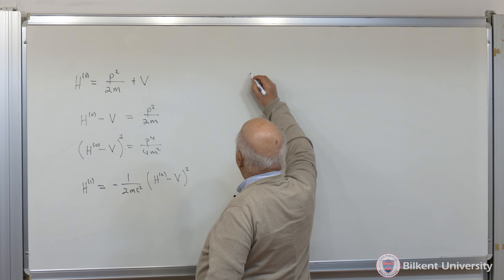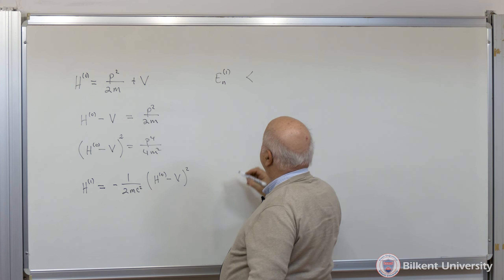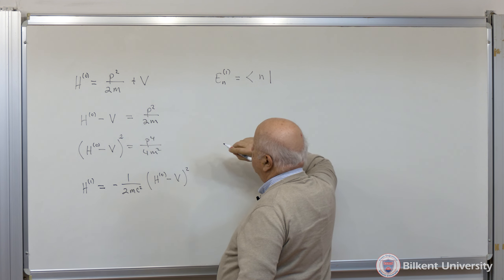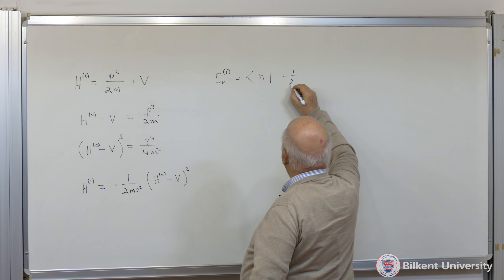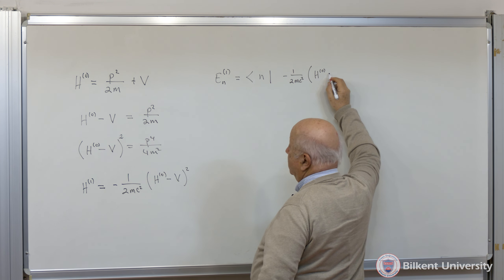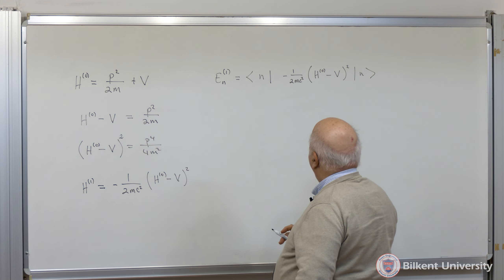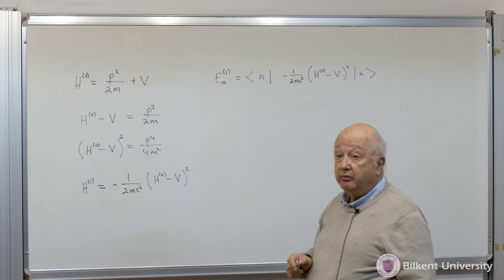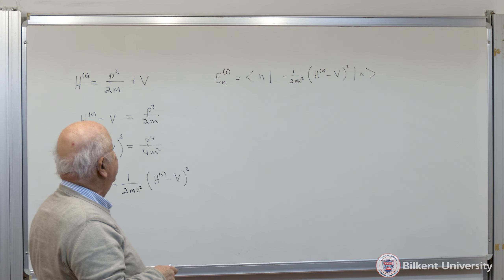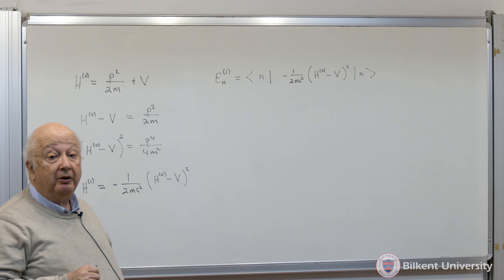That's what I'm going to be using for my first-order perturbation term — it's just a p to the fourth term. So the correction to the nth energy level to first order is going to be equal to the expectation value of this, which is minus 1 over 2mc squared times the expectation value of (H0 minus V) squared in the nth state.